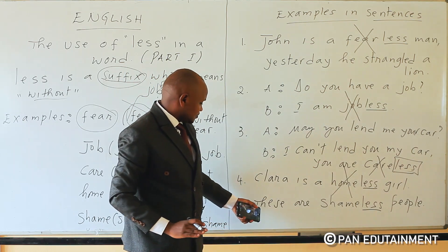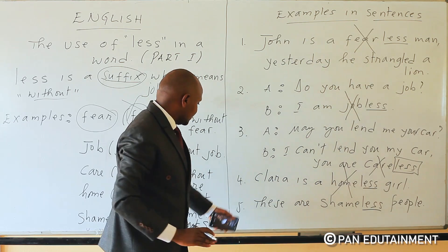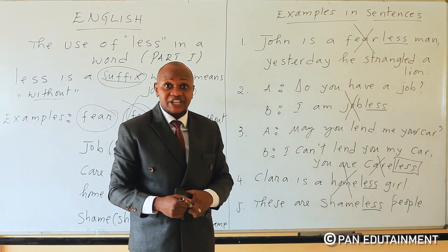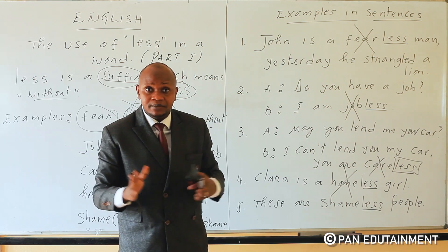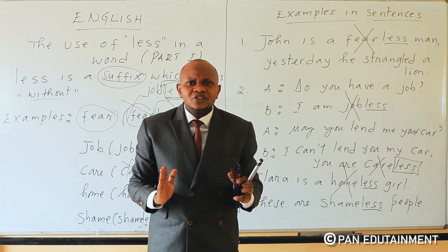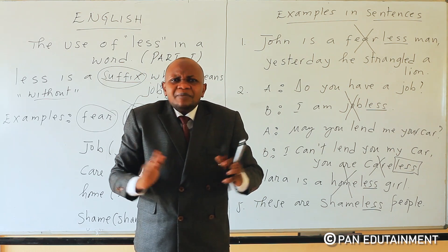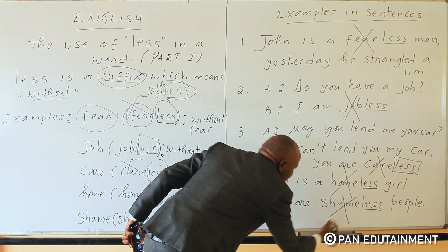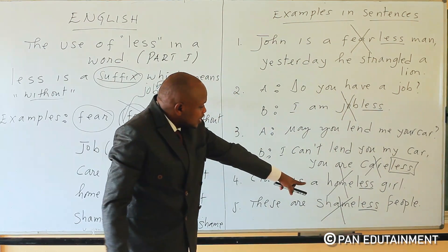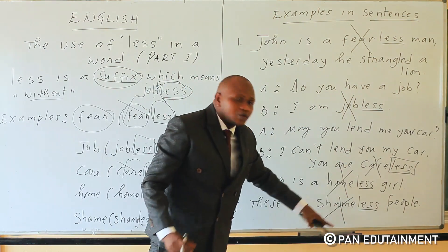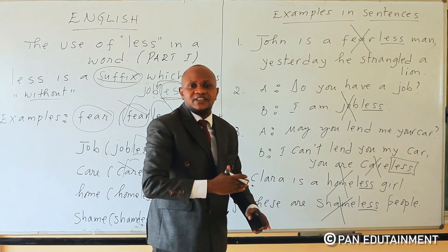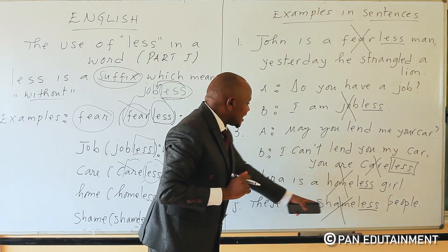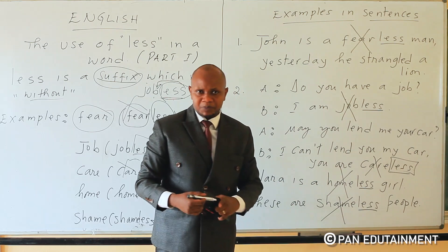Number five, last but not least: these are shameless people. Shame means 'soni' in Kinyarwanda. Someone who is shameless has no shame. These are shameless people.